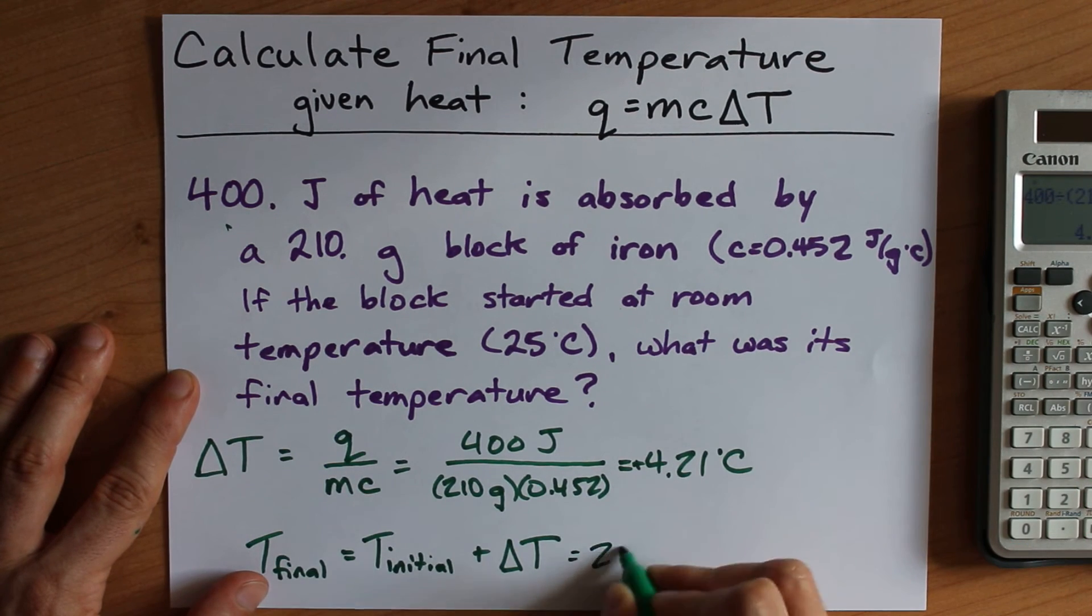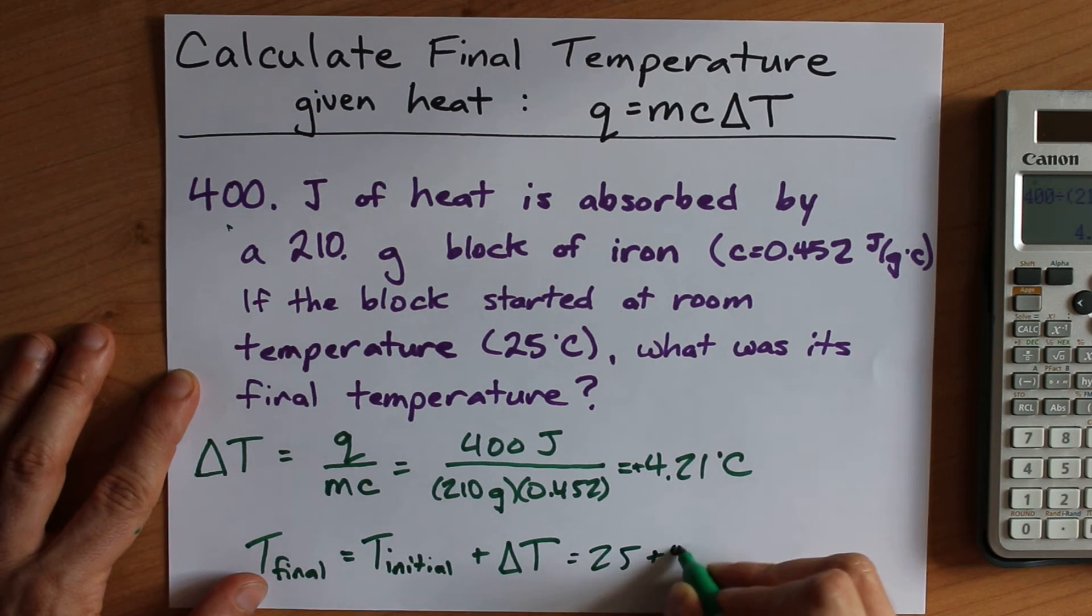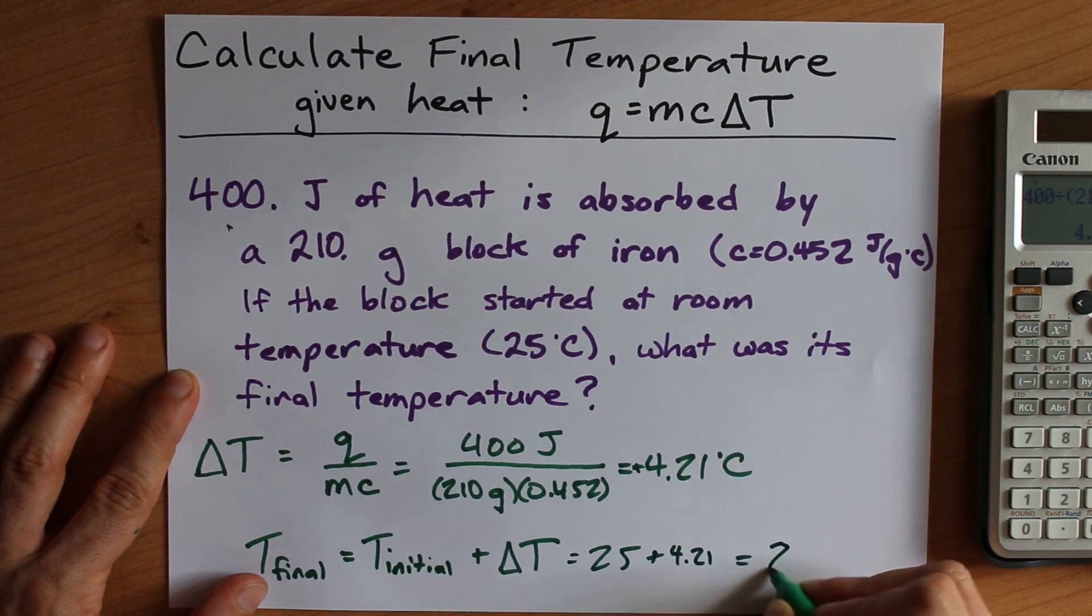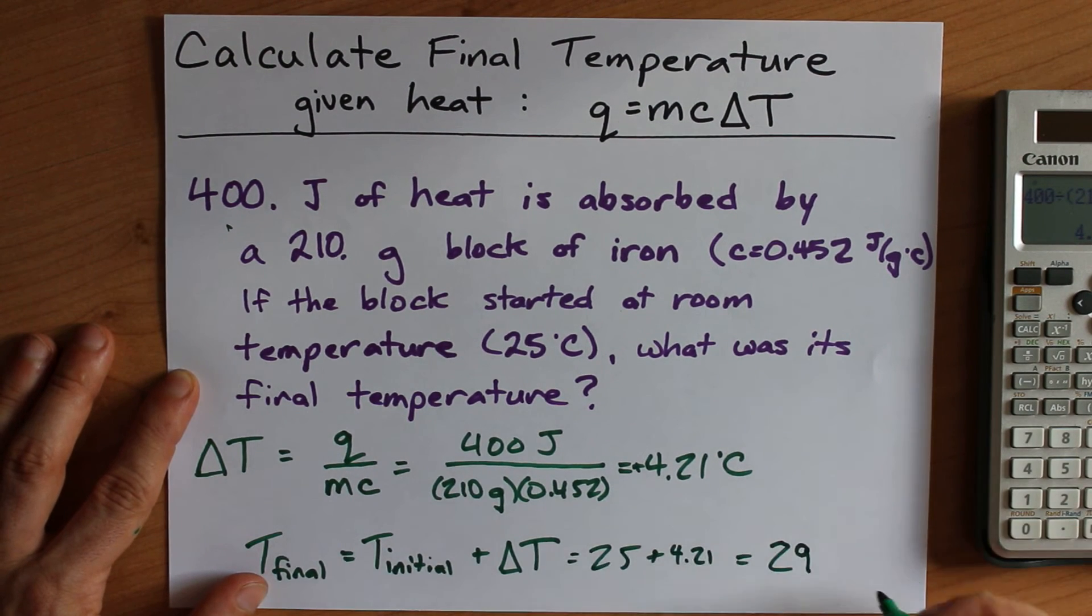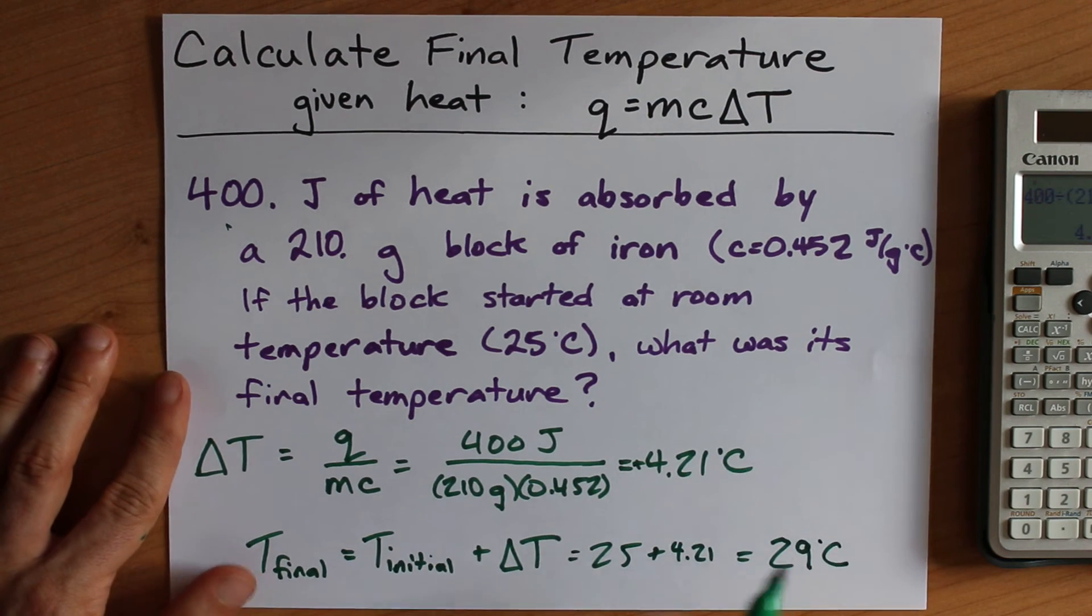In any case, 25 going up by 4.21 gives us a final temperature of about 29 degrees Celsius, 29.21.